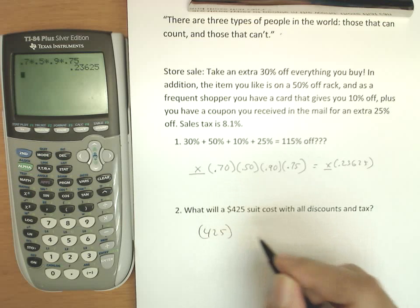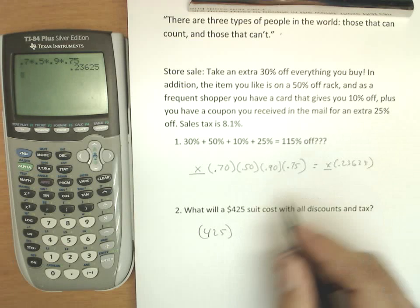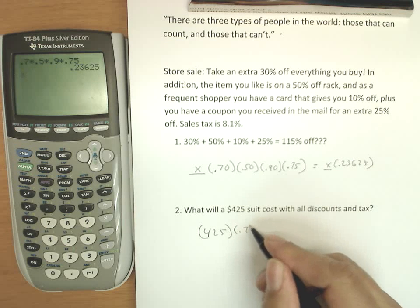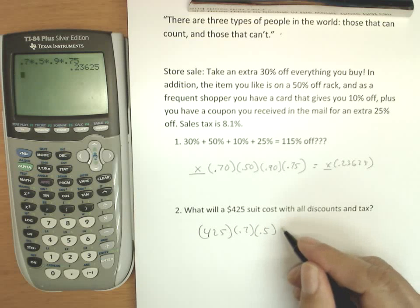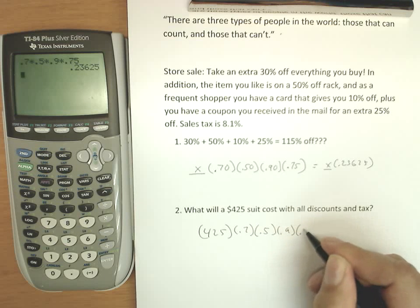Let's do this again for a $425 suit. We could do the whole thing, or we could use our new shortcut number here. But even if we did the entire thing out, 0.7 times 0.5 times 0.9 times 0.75.